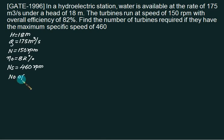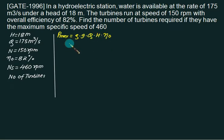So we know the formula for specific speed. Using the specific speed, we can find out the power developed by one turbine and then we will find out the number of turbines. So maximum power developed by using the given head will be equal to ρ Q G H times overall efficiency. ρ is 1000, G is 9.81, Q is given as 175, overall efficiency is 82 percent. So the total power available is 25,000 kilowatts.